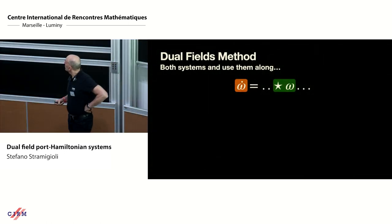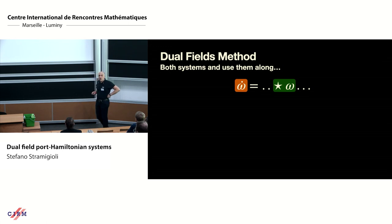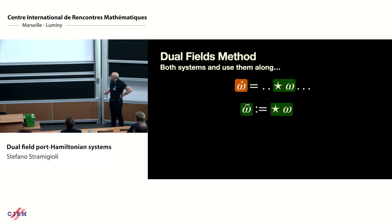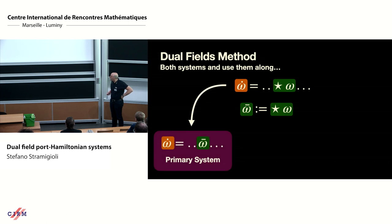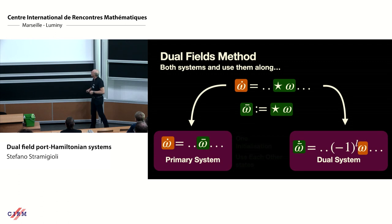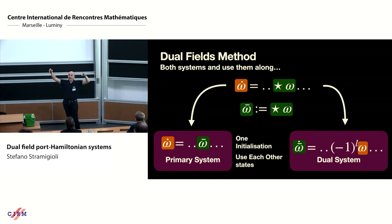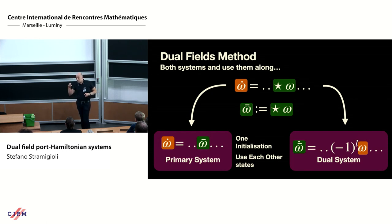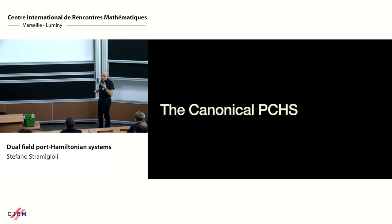So how can we tackle this? The main idea is actually very simple. Suppose you have an equation with an appearance of the Hodge star of omega. You define omega-bar as your Hodge star of omega, and then you define a primary system and a dual system. By considering these two systems at the same time you have a redundant representation: you have one initialization in continuous time, then use each other's states in a crossed way and integrate the two systems together. In this way you will never have to use the Hodge star operator in discretization, and therefore will not make mistakes due to this problem.